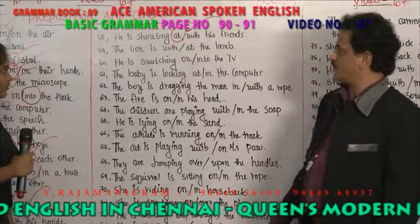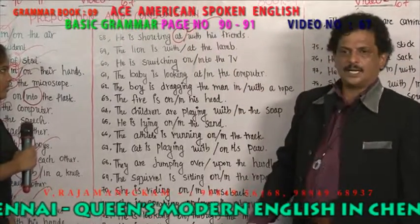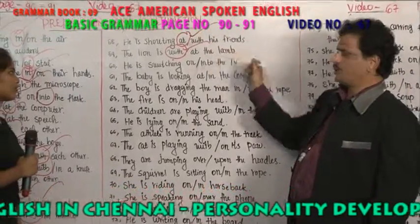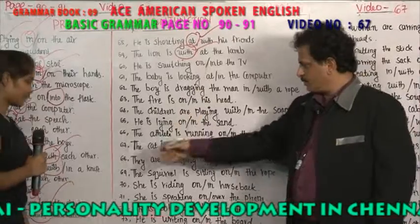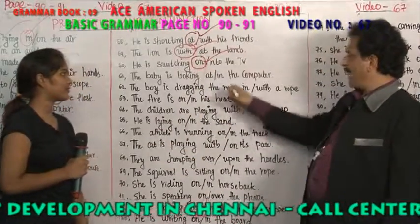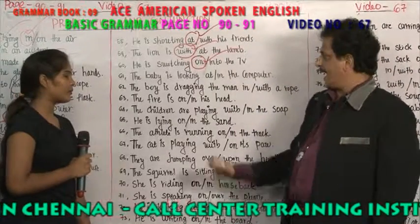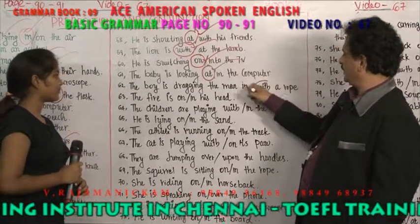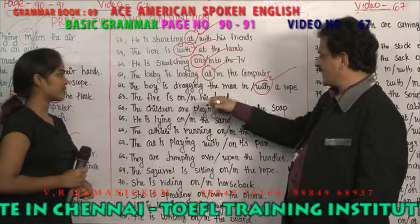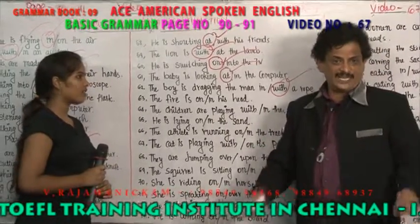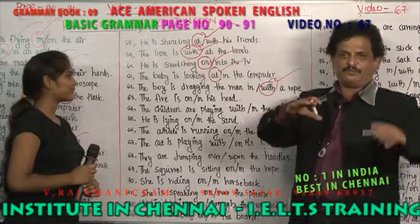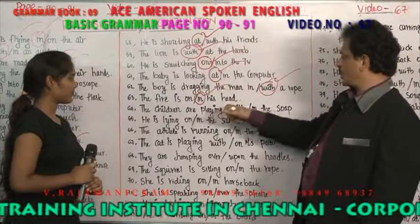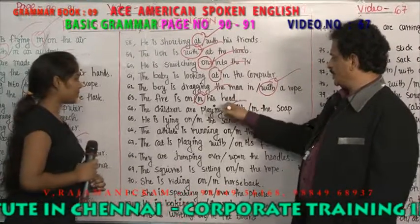The line is at the lamp or with the lamp? 'With the lamp' — 'with' means something you are joined with. He is switching on the television or into the television? 'On the television.' The baby is looking at the computer or in the computer? 'At the computer.' The boy is dragging the man with a rope or in a rope? 'With a rope.' The fire is on his head or in his head? 'In his head' — meaning a burning desire inside his head.